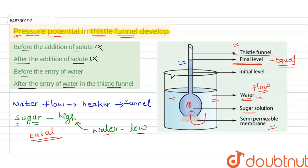So the pressure potential is created after the entry of water into the thistle cell funnel. Before the entry of water, the sugar solution is in its place and water is in its own place — both have their own concentrations and no pressure potential is created. Pressure potential is only created when water enters the funnel and mixes with the sugar solution. Therefore, our answer is the fourth option.